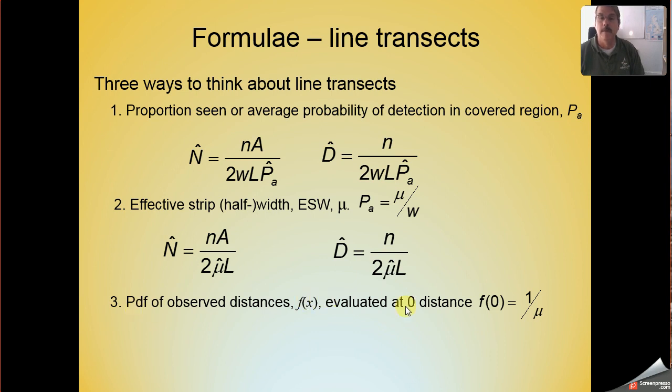The third and final way of coming out the problem of abundance estimation was to use the probability density function f(x), specifically the value that f(x) takes on at distance 0. So, we'll find f(0) to be a central character in our understanding of the estimation of population size once we recognize this inverse relationship between f(0) and mu. We can then insert that substitution into our equations and come up with these fairly simple equations that allow us to estimate population size or density if we've estimated the probability density function and evaluated that probability density function at distance 0.